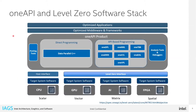Level Zero sits at the lowest level in the user space of our stack. In this case, we are seeing a GPU, an AI device, an FPGA — all of them sitting right below Level Zero. Level Zero could be used directly by an application, by a framework, etc. What we are showing here in the slides is how Level Zero sits in the OneAPI software stack.